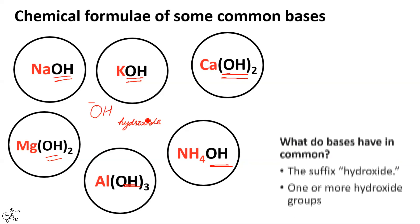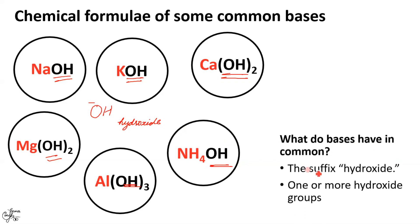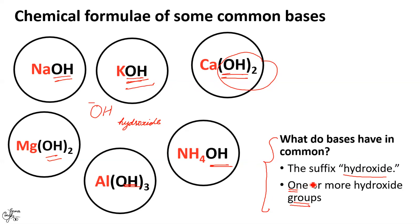The OH group is an anion with one negative charge, known as the hydroxide ion. Thus we can generalize that all bases have the suffix 'hydroxide' and at least one or more hydroxide groups in their formulae — here you can see two, but here there is one. We also observe that the anion OH⁻ is common to all, but the corresponding cation differs: here you have sodium ion, here potassium ion, here calcium cation. Note this is the reverse of what we saw in acids.